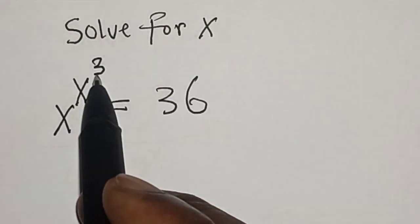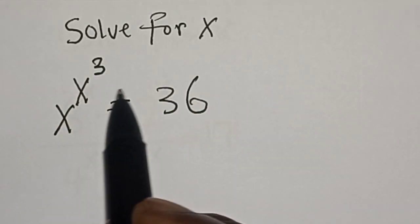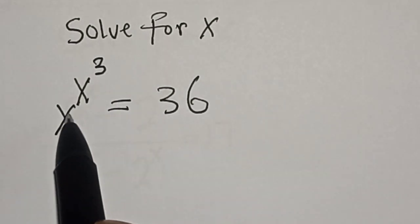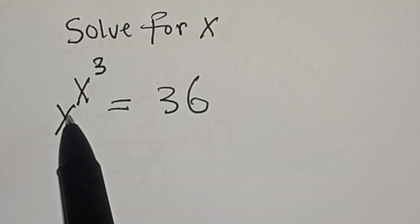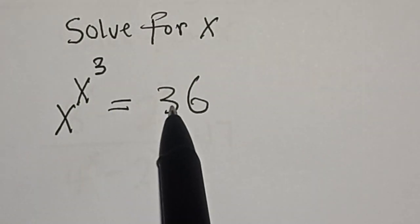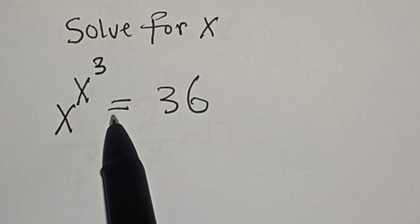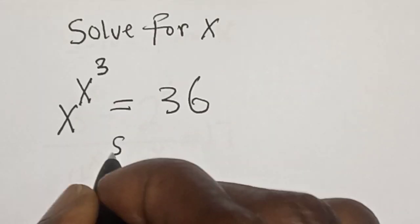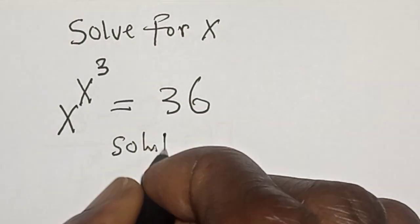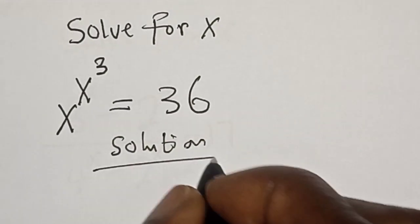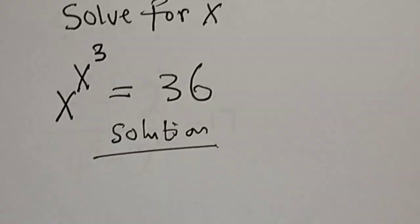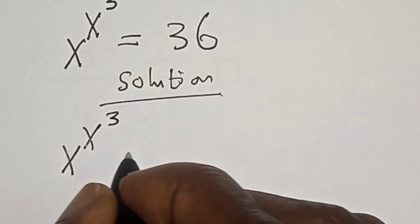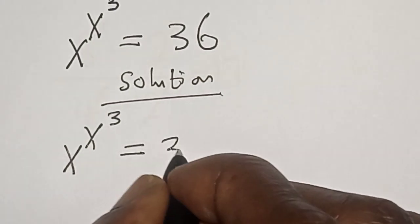Hi everyone, welcome to my class. In this class we want to find the value of s from this beautiful exponential equation: s raised to the power of s raised to the power of 3, is equal to 36. Before we proceed, please don't forget to like, share, comment, and subscribe. Thank you.